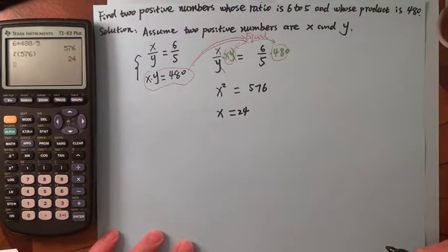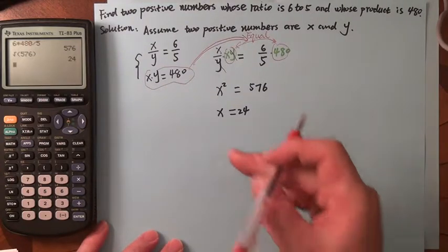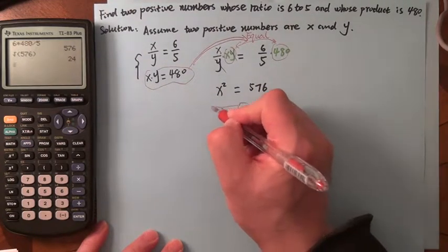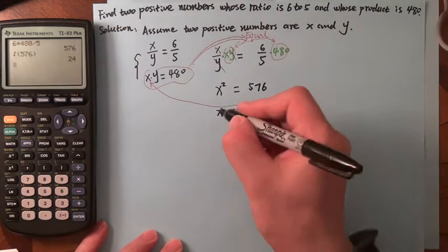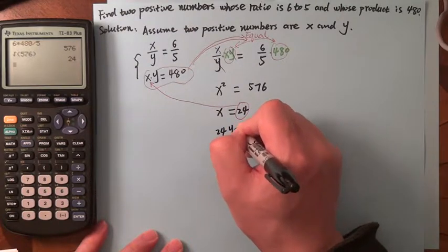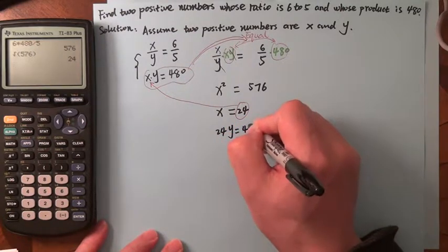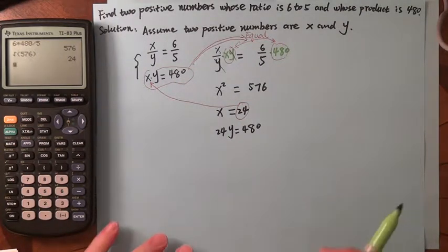If X is 24, then what is Y? Put it back here: 24 times Y equals 480. Now both sides divided by 24.